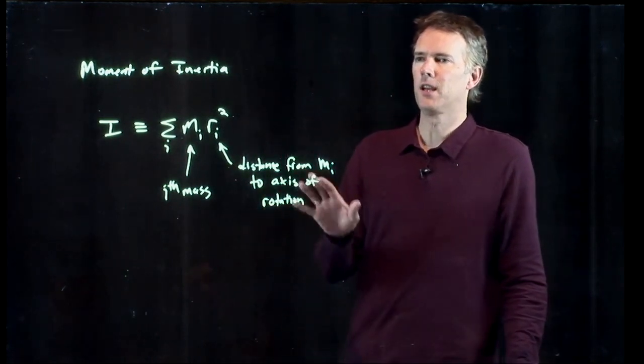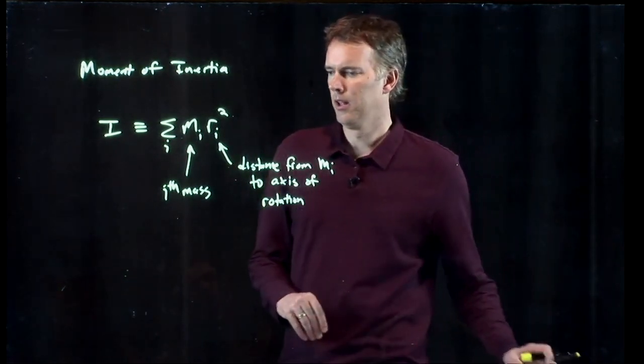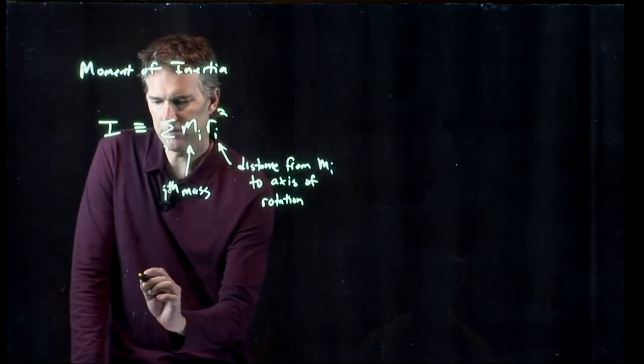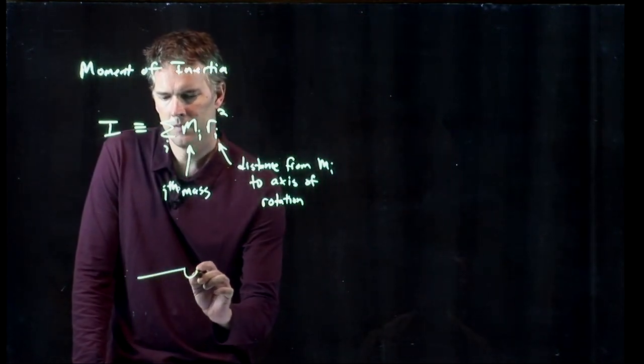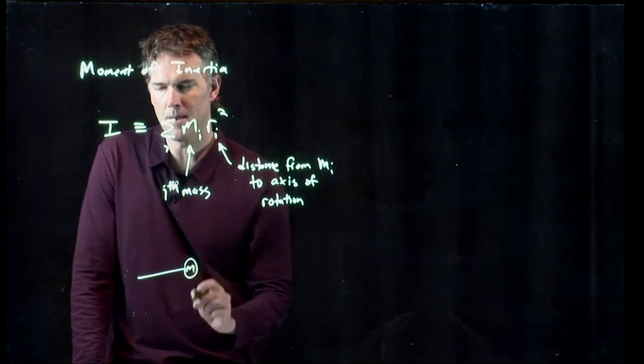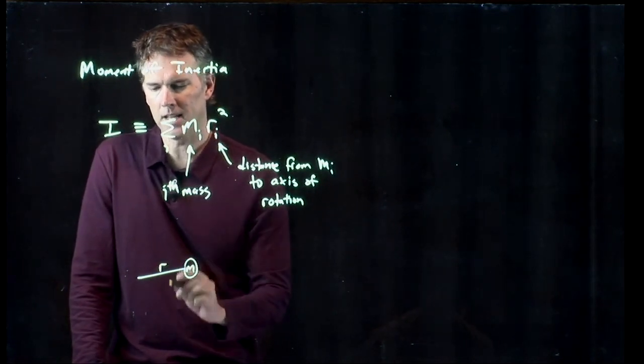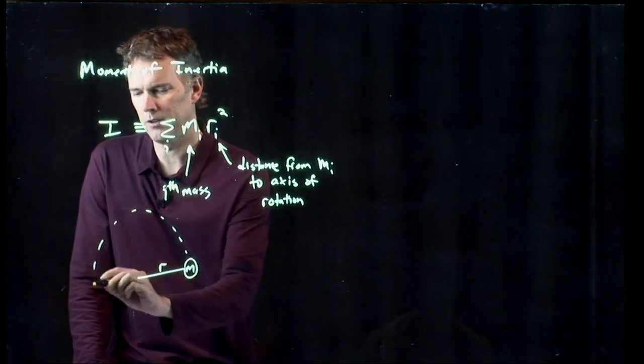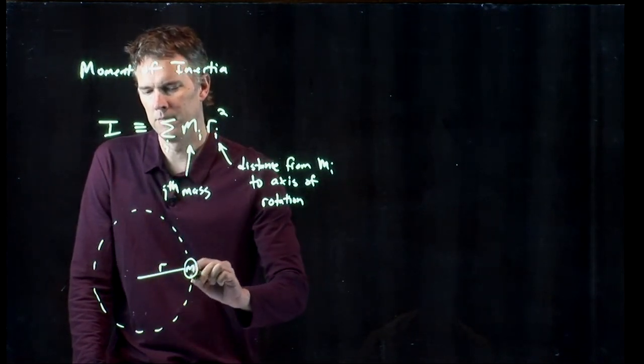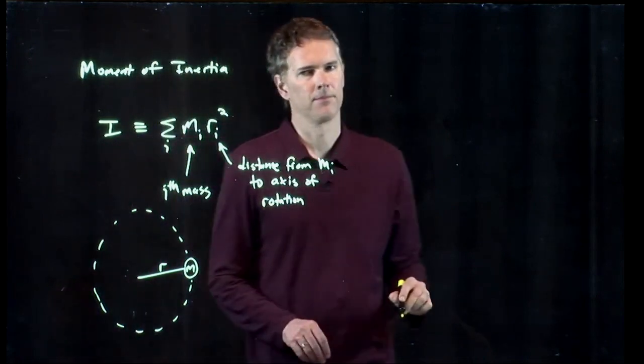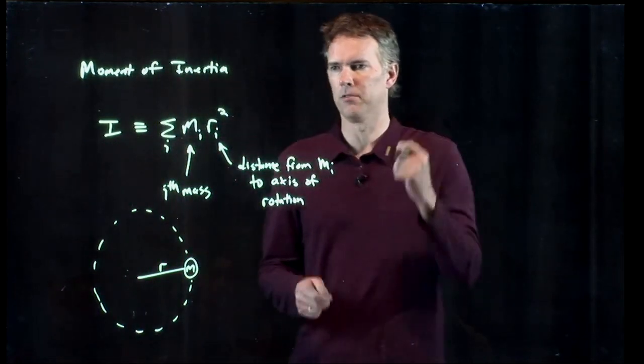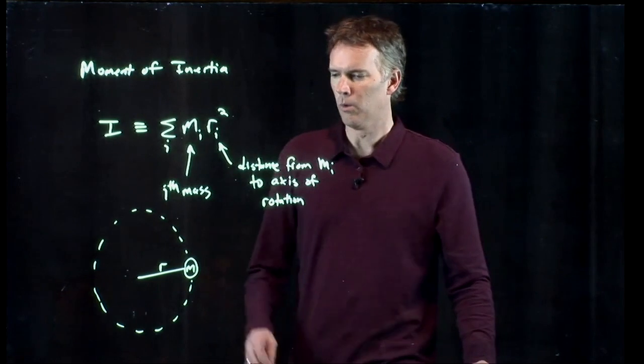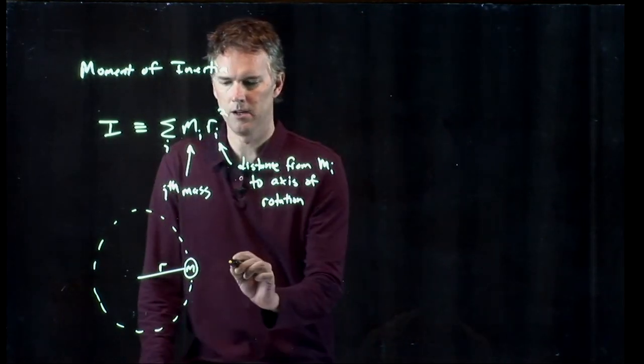So if we're thinking about something simple like a particle on a string, let's say here's my mass m and it's sitting out there at radius r and it's spinning around in a circle. As you're yo-yo on a string you're going to spin it around in a circle. What is the moment of inertia here?